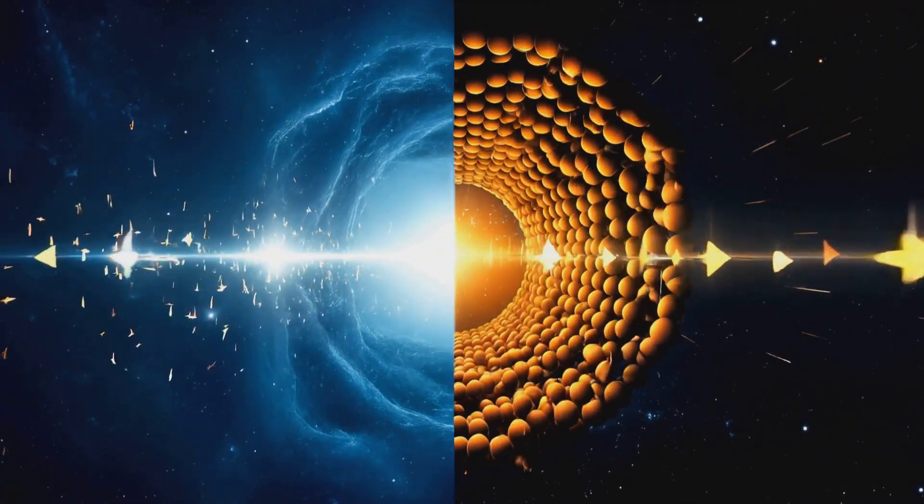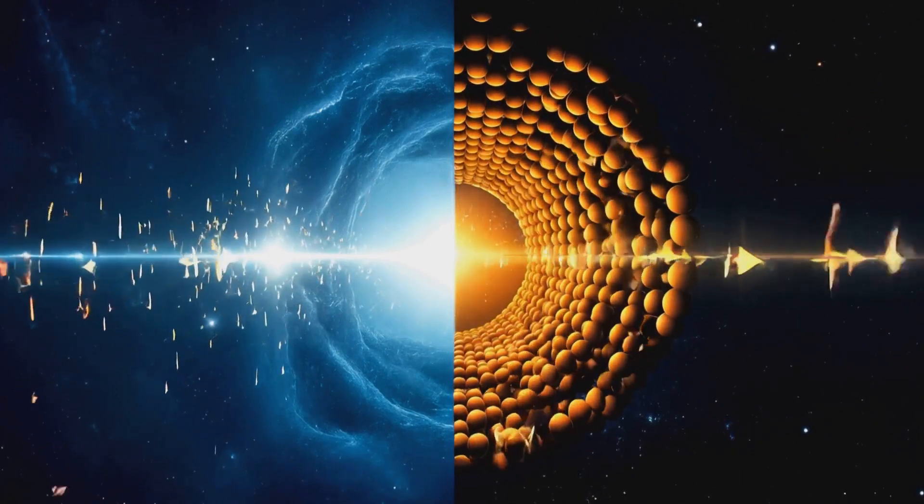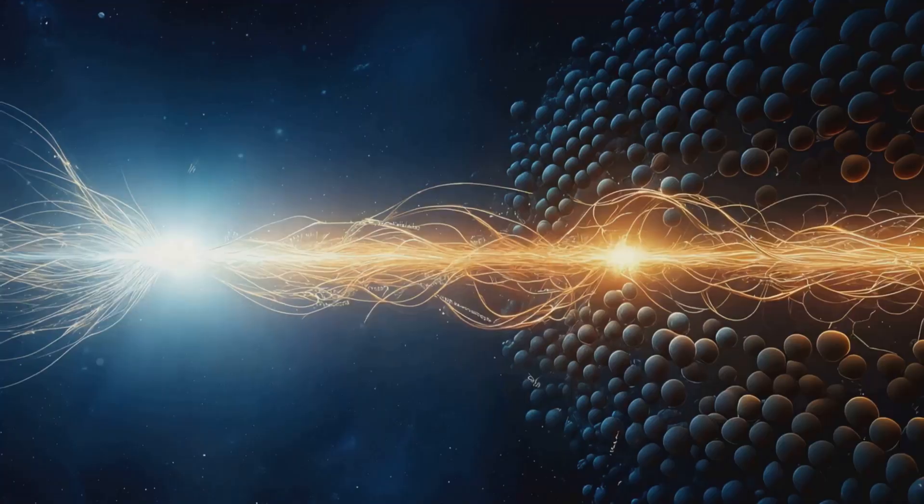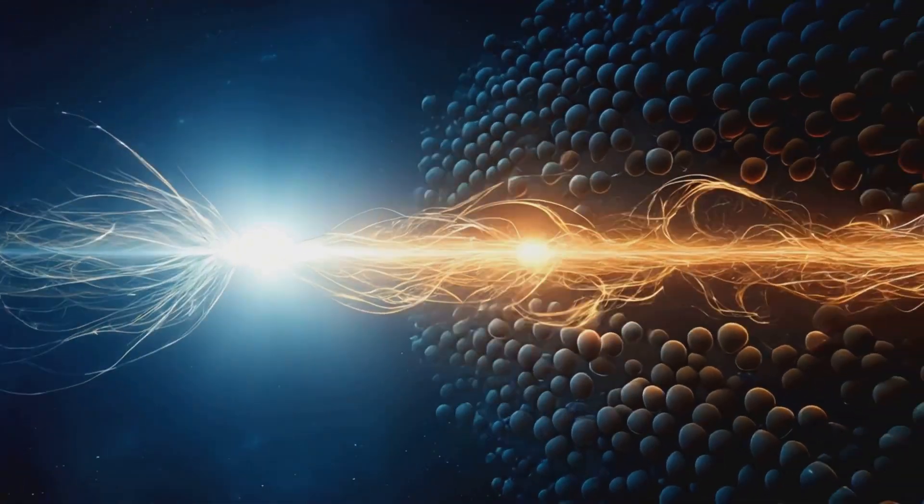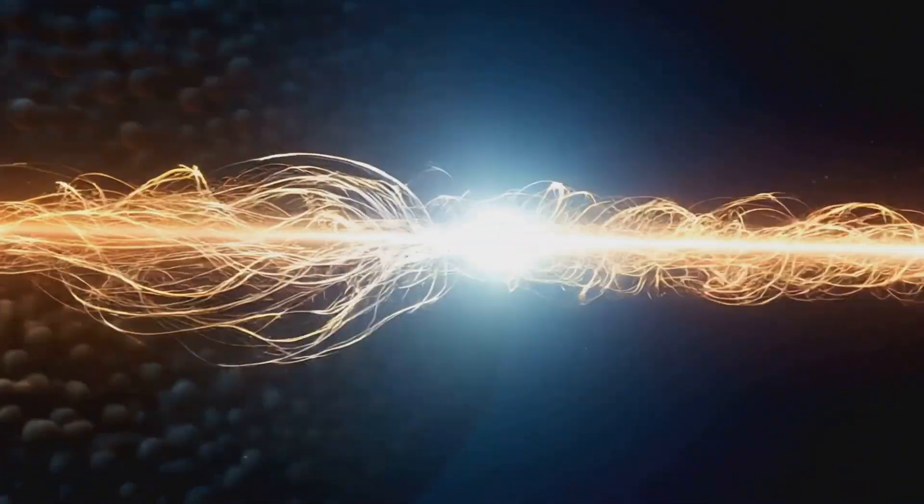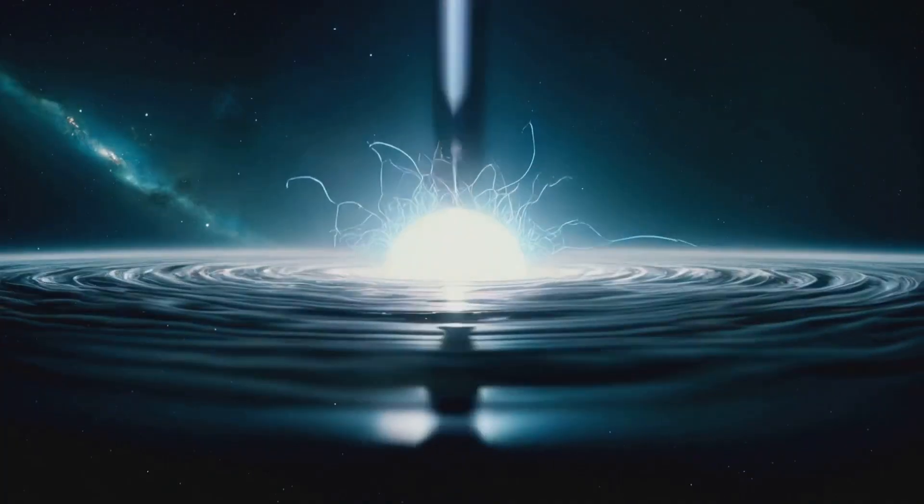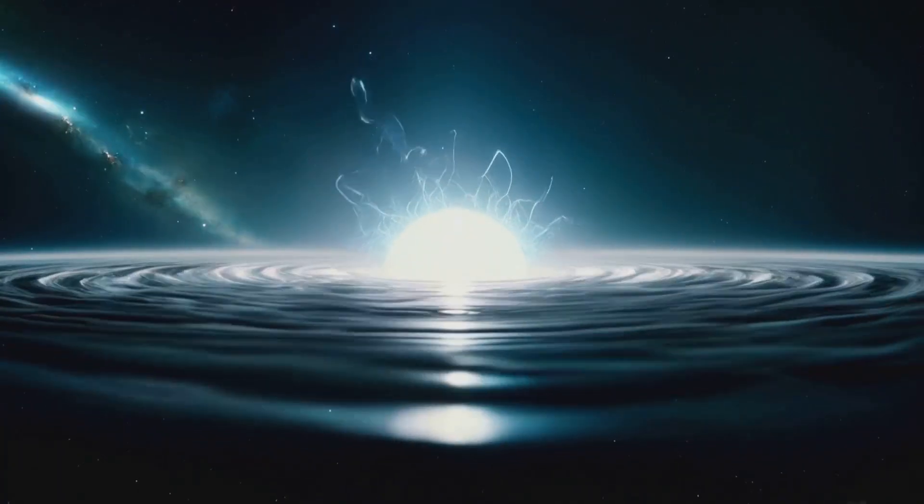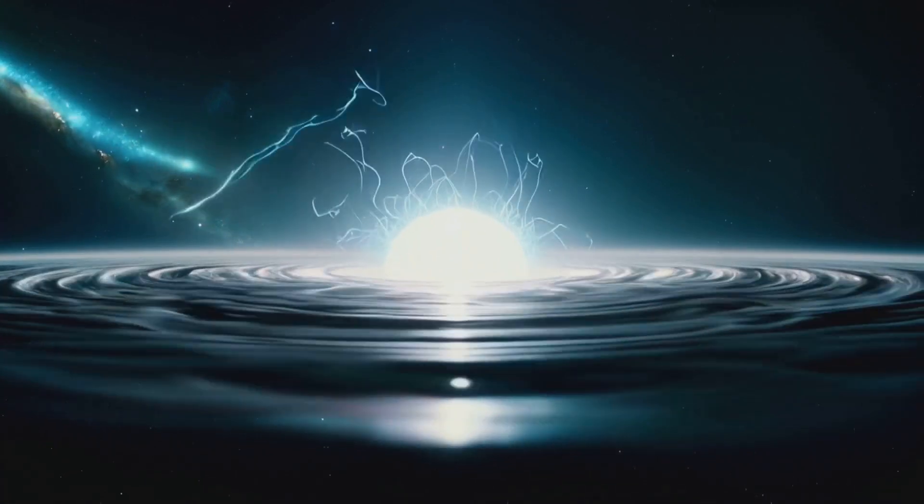Occasionally, two photons of opposite spin converge, birthing a profound transformation. In this fleeting moment, these superposed photons collapse into an entangled black hole pair. One becomes a singularity while its twin forms an event horizon, a shimmering veil.